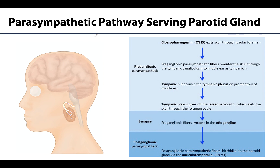Here's that chart again — hopefully it doesn't seem as overwhelming. The glossopharyngeal nerve is the source of the preganglionic parasympathetic fibers. Those fibers join together as the tympanic nerve, spread out as part of the tympanic plexus, then rejoin to form the lesser petrosal nerve, which exits the skull through the foramen ovale.